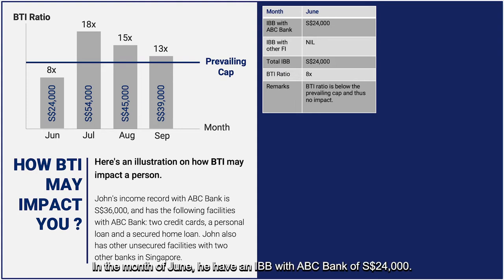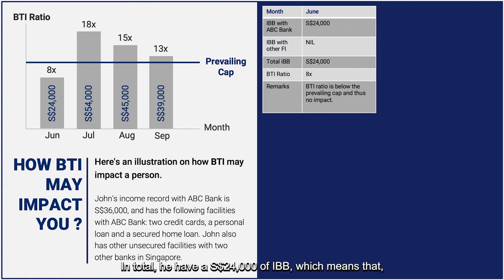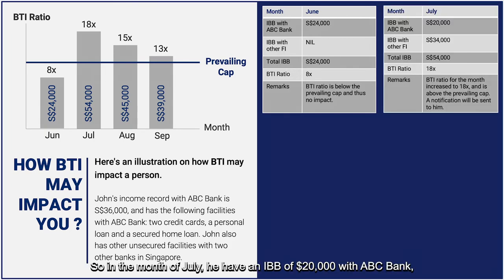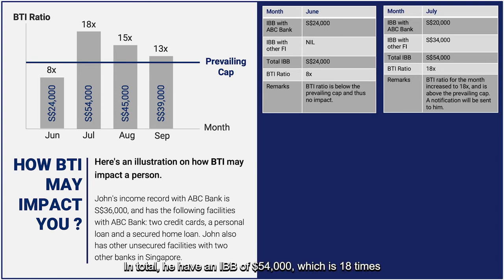In the month of June, John has an IBB with ABC Bank of $24,000 and zero IBB with other financial institutions, giving a total IBB of $24,000 — which is a BTI ratio of 8 times. This is below the prevailing cap of 12 times, so this passes. In July, his IBB with ABC Bank is $20,000 and $34,000 with other financial institutions — a total of $54,000, which is 18 times. This exceeds the 12-times cap and a notification will be sent to him.